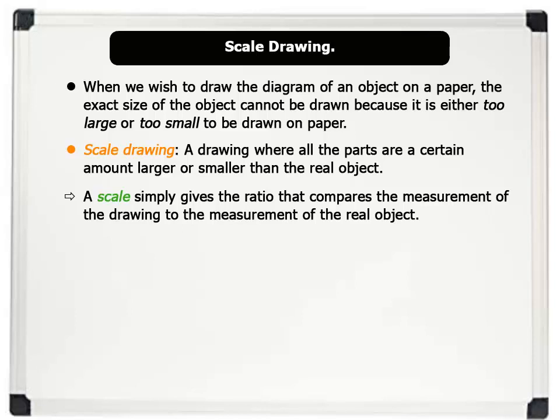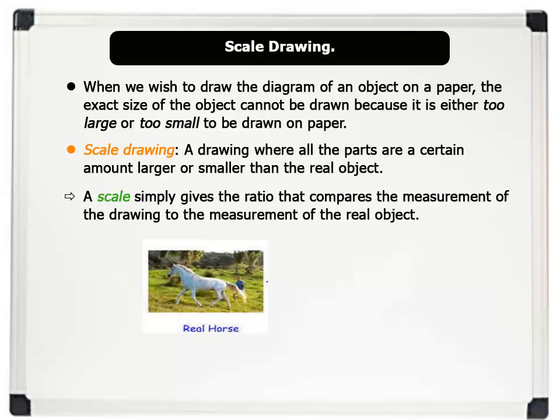Note that a scale simply gives the ratio that compares the measurement of the drawing to the measurement of the real object. For example, this image of a real horse is converted to a scale drawing with a scale of 1 ratio 10 or 1 is to 10. This means that in this drawing of the horse, all parts of the drawn horse are 10 times smaller than the real image of the horse.